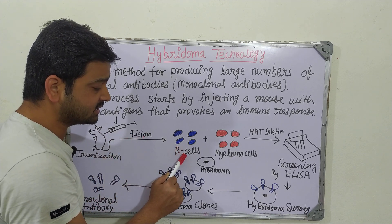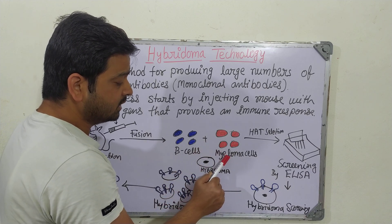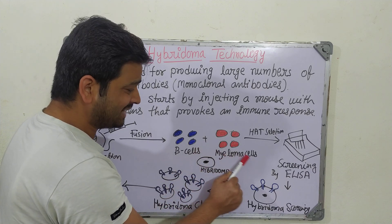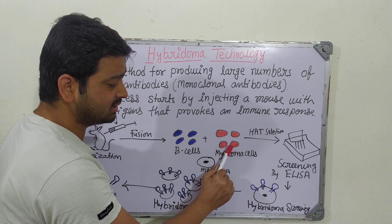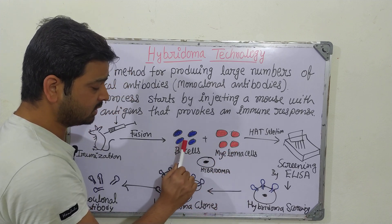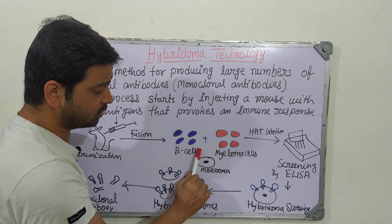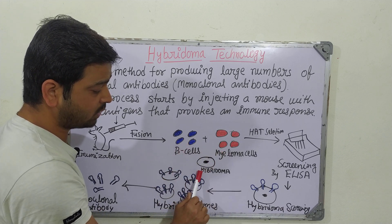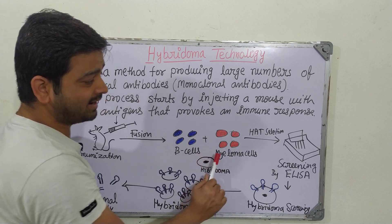After that, we collect the B cells and clone them with the myeloma cells. The red color you are seeing in the circle — these are the myeloma cells — and the blue color is the B cell. After combining these two, the hybridoma is prepared.